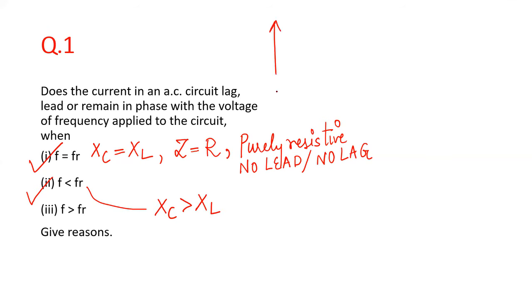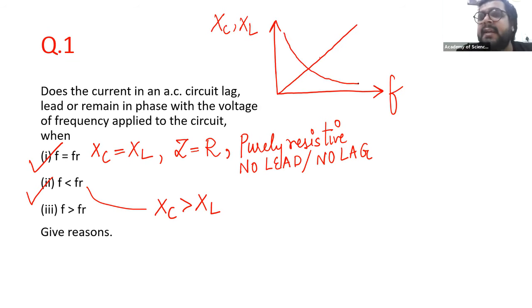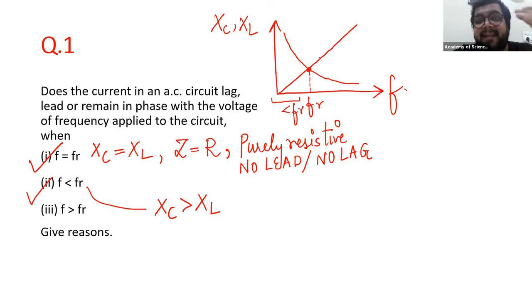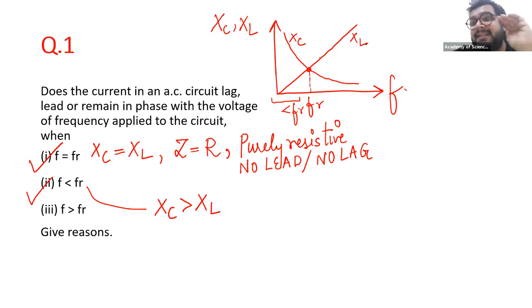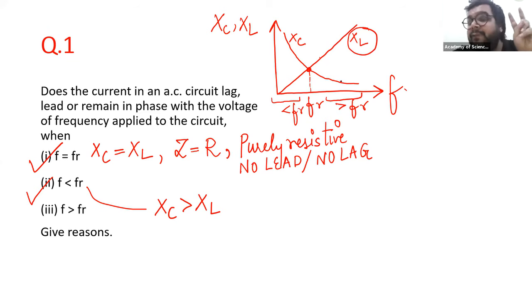If you remember the graph plotted in the last class — XC and XL versus frequency — for XL the relationship is direct, and for XC the relationship is inverse. The two values are equal at the resonant frequency. For all frequencies less than the resonant frequency, XC is larger and XL is smaller. For all frequencies greater than the resonant frequency, XL has a larger value and XC has a smaller value.